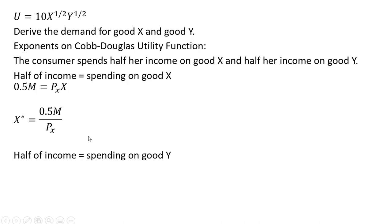Likewise, if she spends half her income on Good Y, half her income is 0.5M, and the spending on Good Y is the price of Good Y times units of Good Y. If we solve this equation for Y, we have the ordinary demand for Good Y.